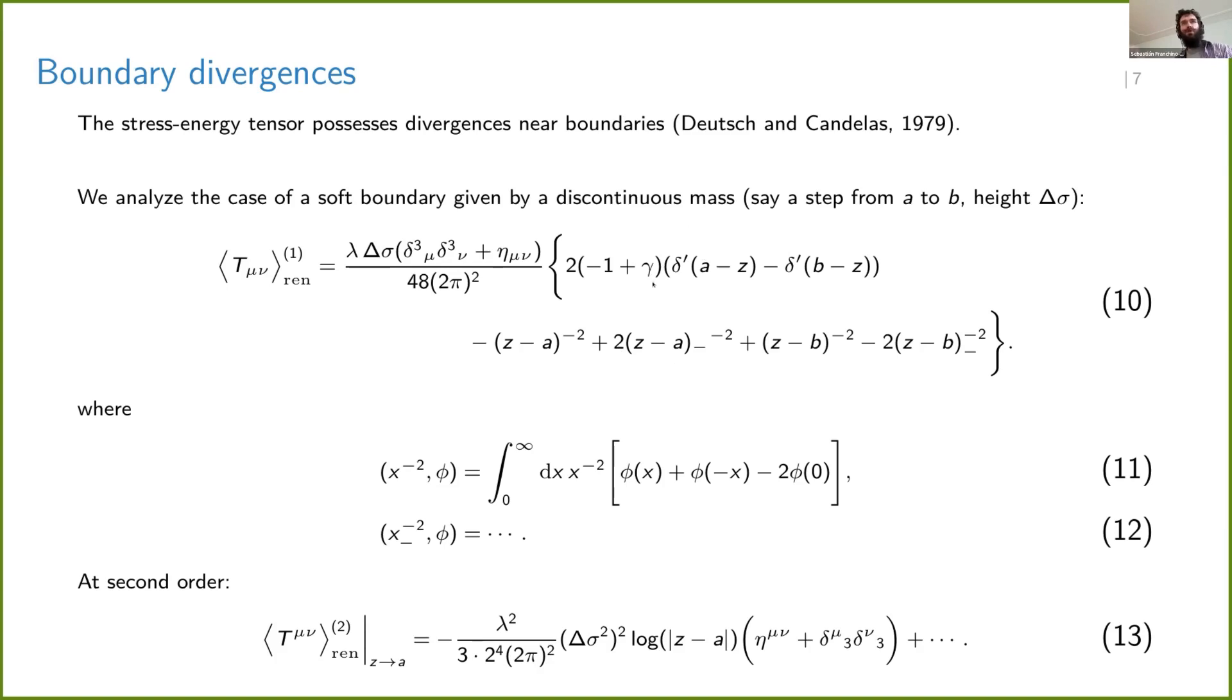That's what you're seeing in equation 10. You see delta primes going up there, and you can also see some powers, inverse powers of the coordinates when you arrive at the boundaries, at A or at B. But these are also distributions and the definitions you can see are in equation 11, 12, and so on.